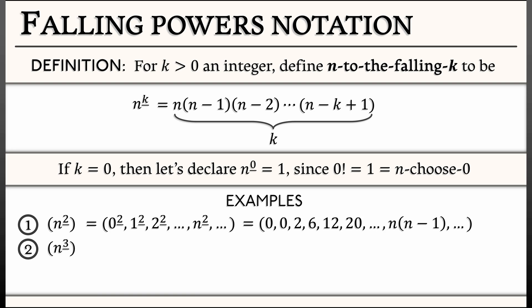For another example, n to the falling 3. The individual terms of that are going to be 0 to the falling 3, 1 to the falling 3, 2 to the falling 3. The nth term in that sequence is n times n minus 1 times n minus 2. Because of that, the first three terms in this sequence vanish, and the first non-zero term is going to be 3 to the falling 3. That is 6, or 3 factorial.